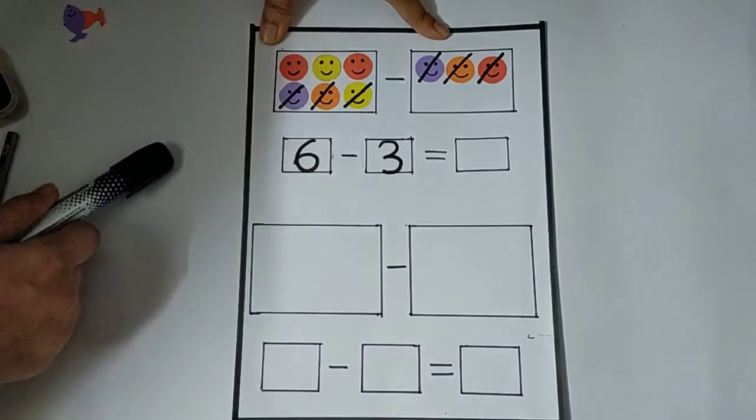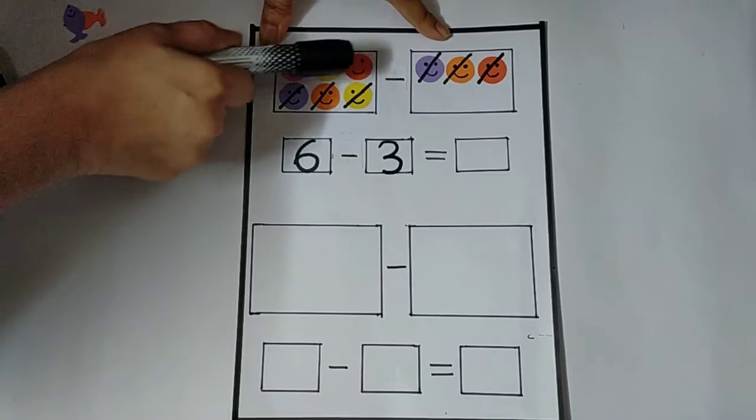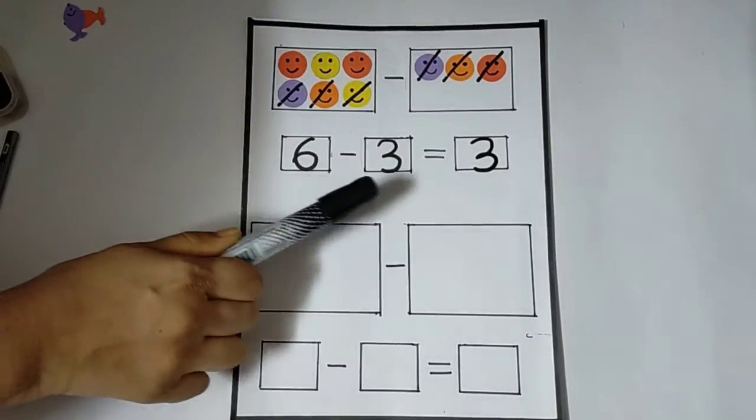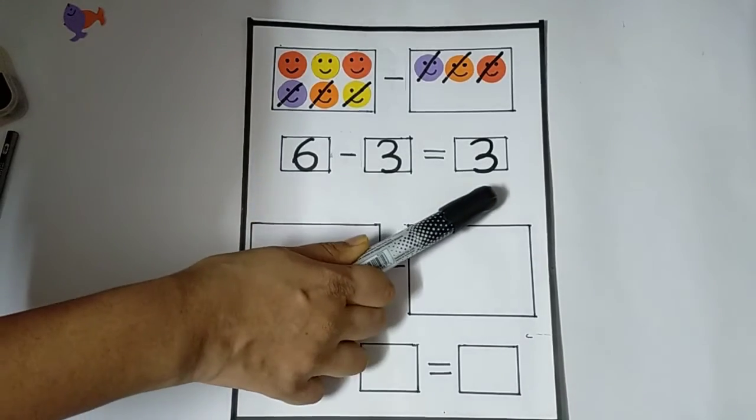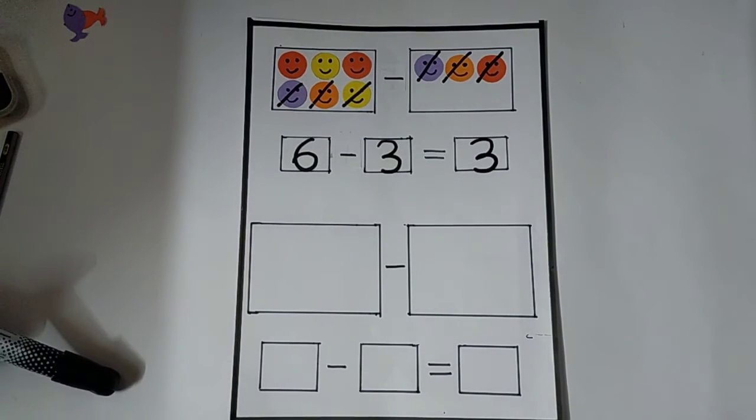So, how many left? One, two, three. So, six minus three equals to what? Three. So, let us do another one.